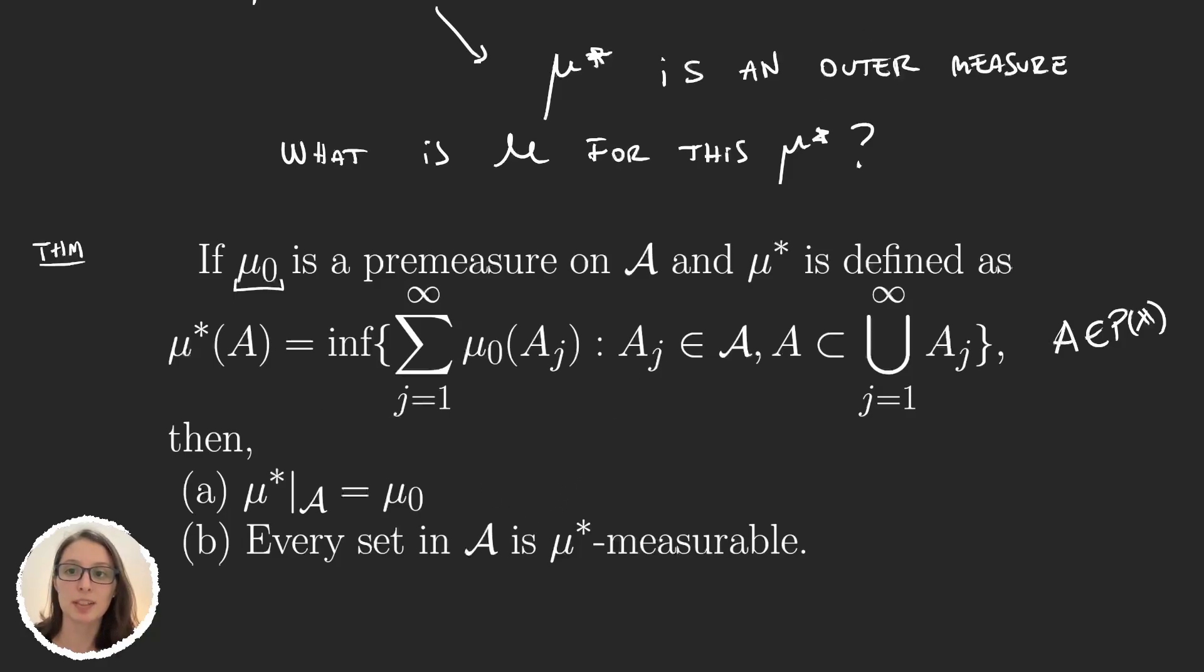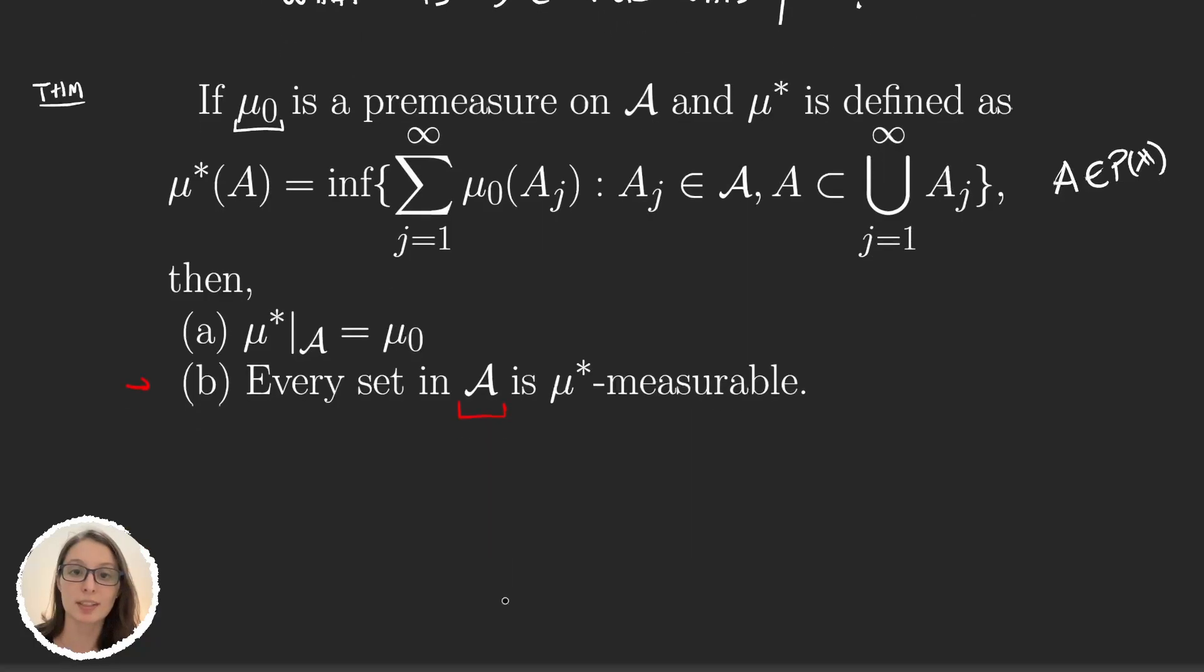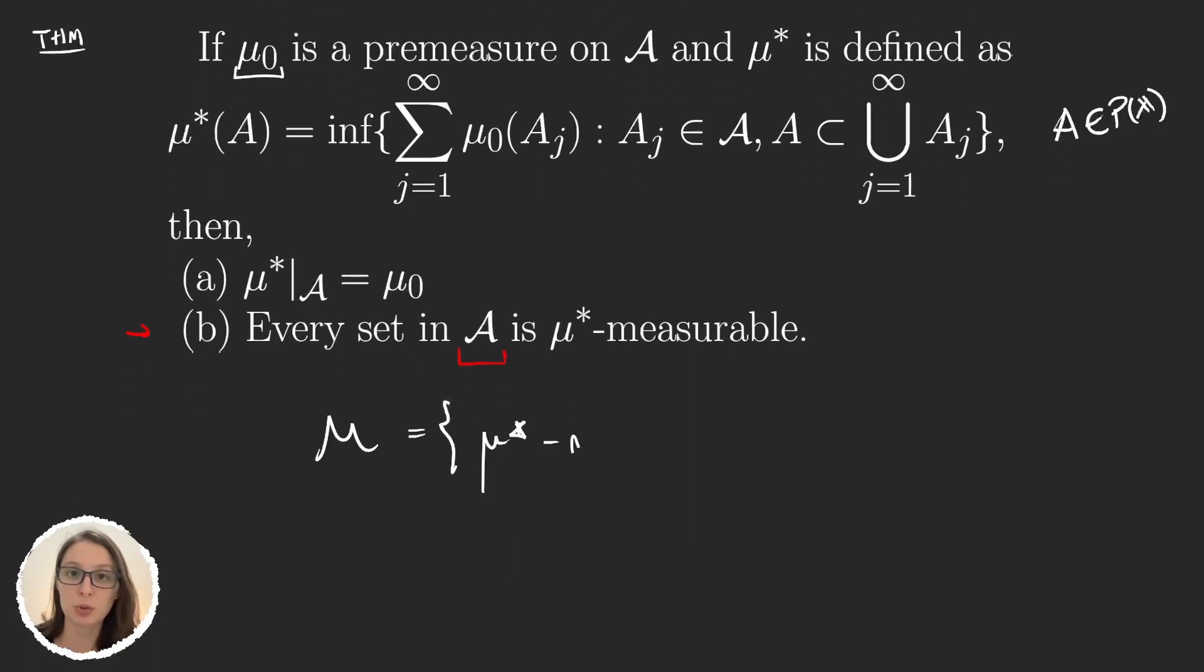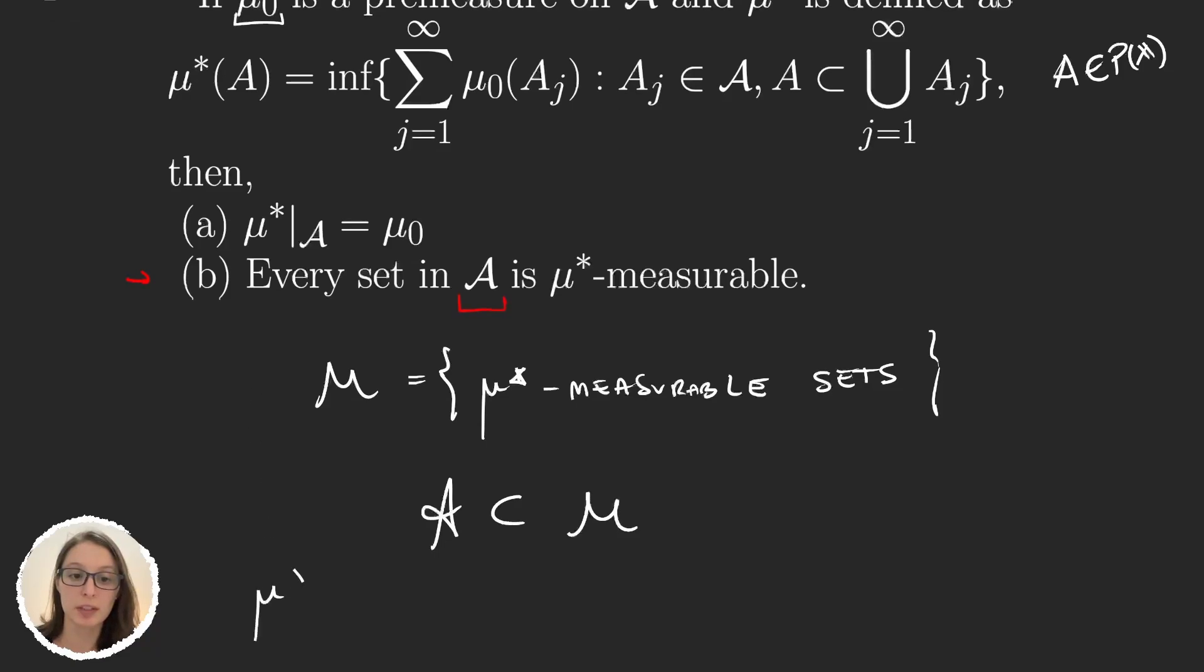The important part is this second one. Because the second thing this theorem is telling us is that every set in the algebra A is μ* measurable. So if I grab the sigma algebra M of μ* measurable sets, then I can say that the elements in my algebra are contained in M. So all the elements in my algebra are μ* measurable.